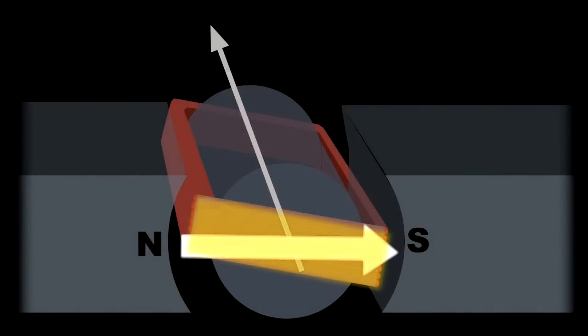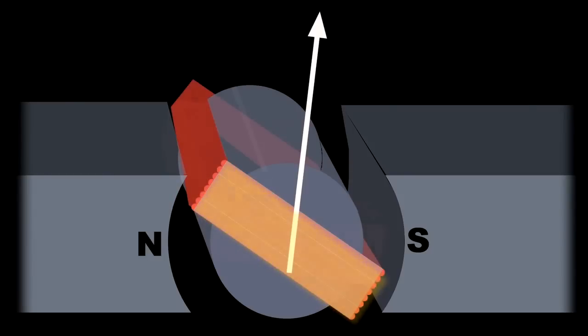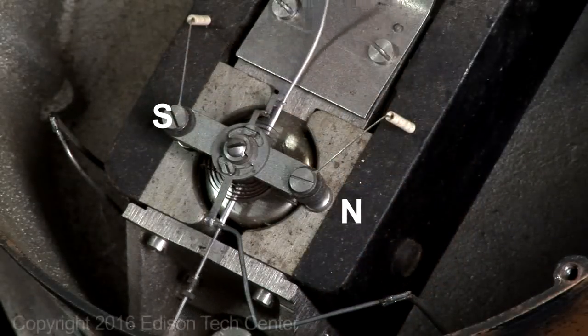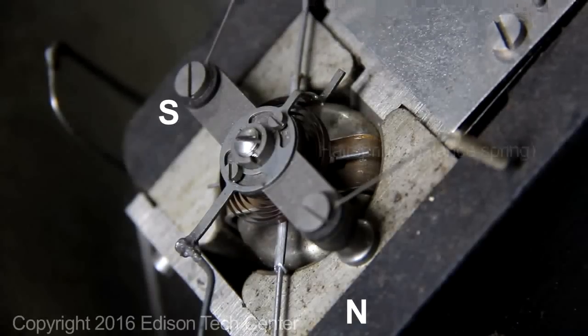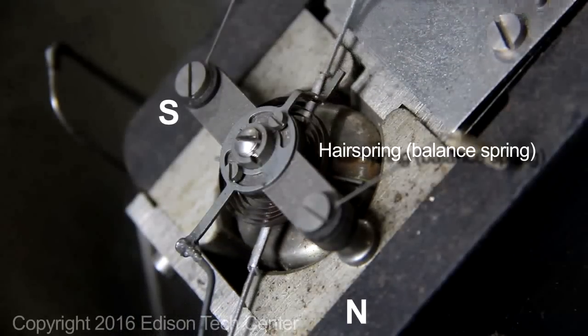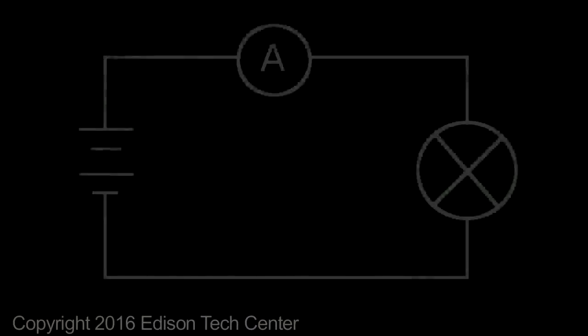Moving coil galvanometers place an energized coil of wire inside two permanent magnets. A balanced spring keeps the needle oriented at zero with no current in the coil. This construction became the standard for the 20th century and is still used today in many applications.